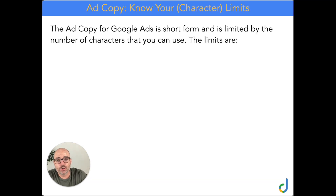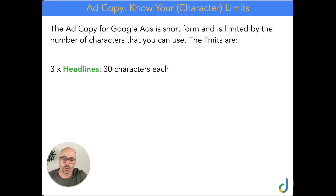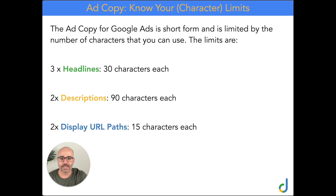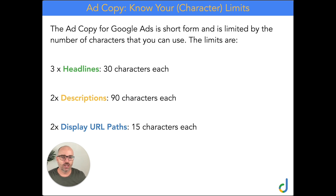Google Ads is short form. You've only got three headlines with 30 characters each, two descriptions at 90 characters each, and you can edit the display path URLs at 15 characters each. Any way you look at it, you've only got a really small window to grab someone's attention.